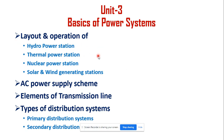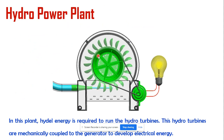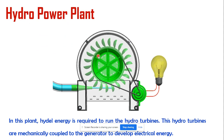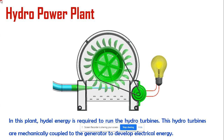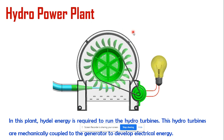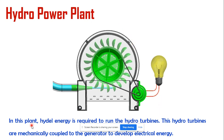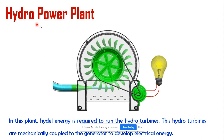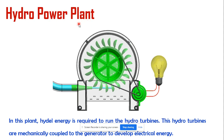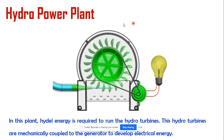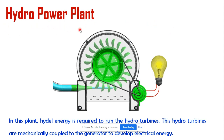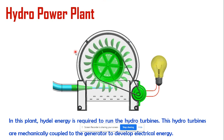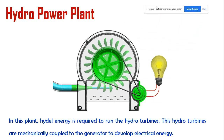Hydro power generally produces one of the cleanest methods of electrical power. Hydro electricity is the most widely used form of renewable energy. A power plant is defined as the plant where electrical power is generated. If electrical power is generated by means of hydro power, it is called a hydro power plant. In this power plant, hydro energy is required to run the hydro turbines.